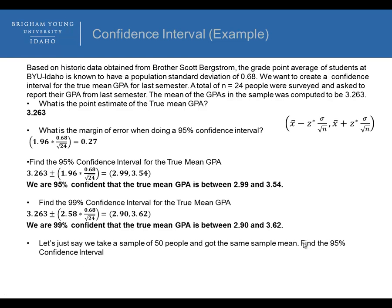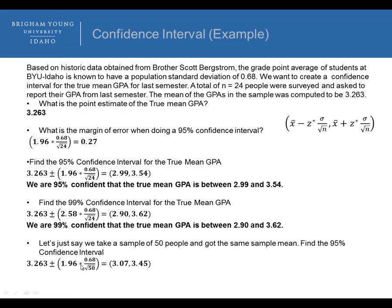Now let's say we take a sample of 50 people and got the same sample mean. Finding the 95% confidence interval, the only thing that changes is our sample size. We get a lower bound of 3.07 and an upper bound of 3.45. So we are 95% confident that the true mean GPA is between 3.07 and 3.45.